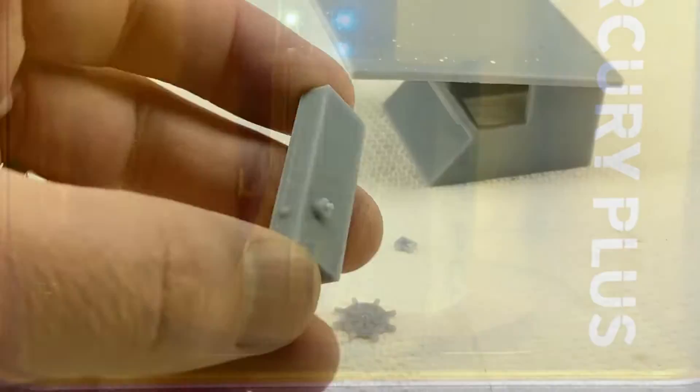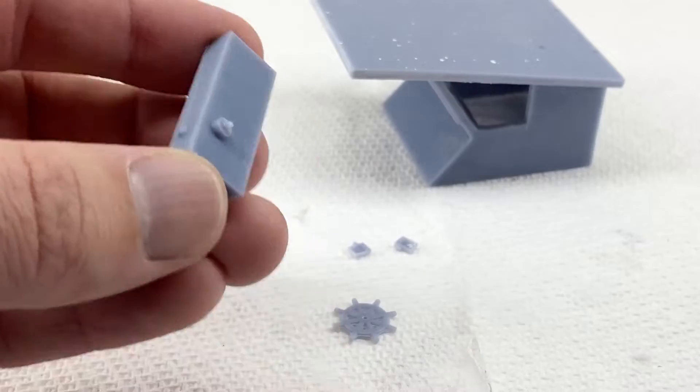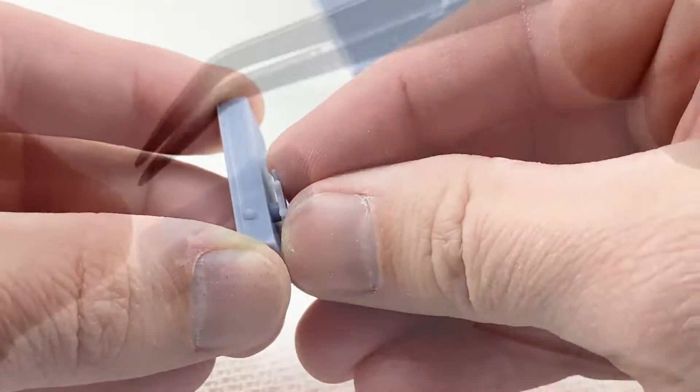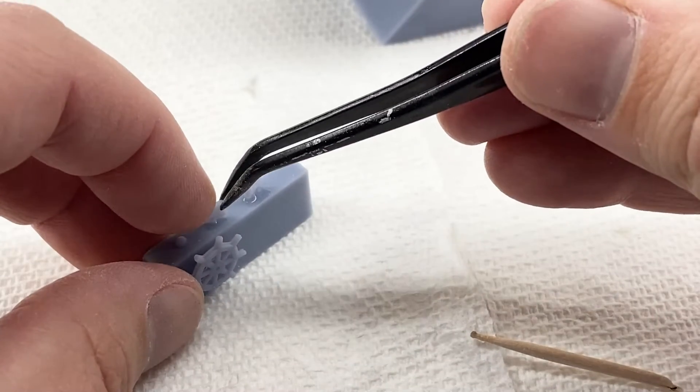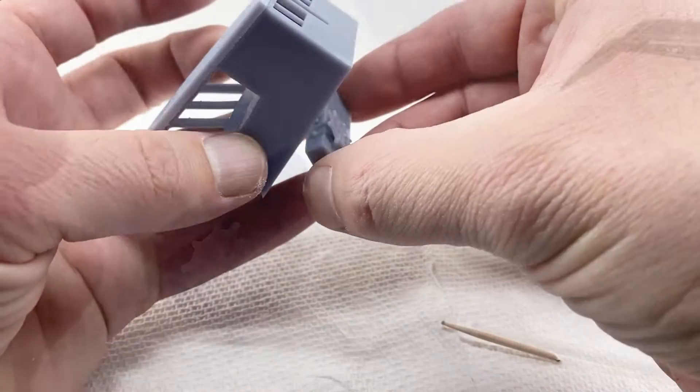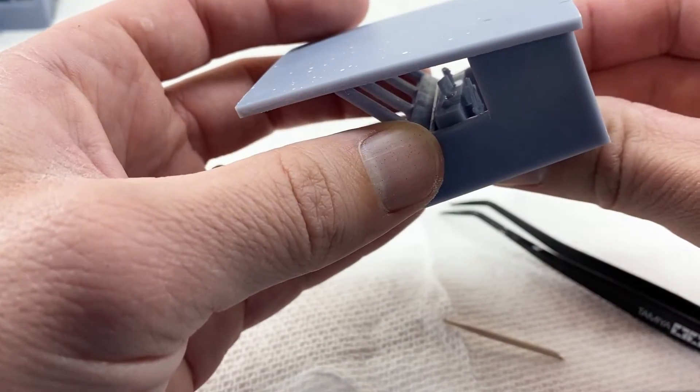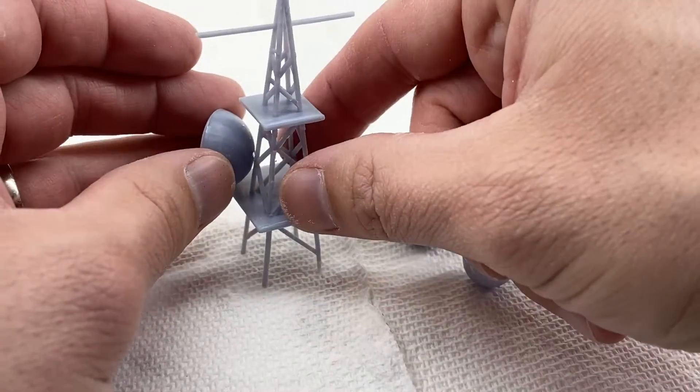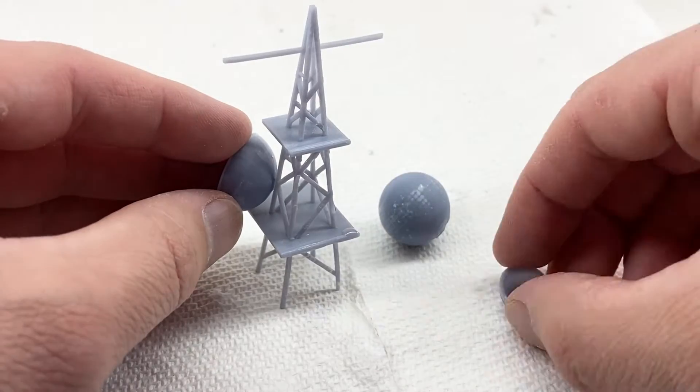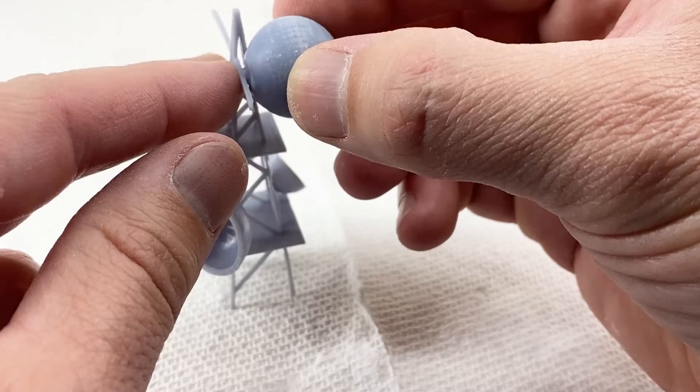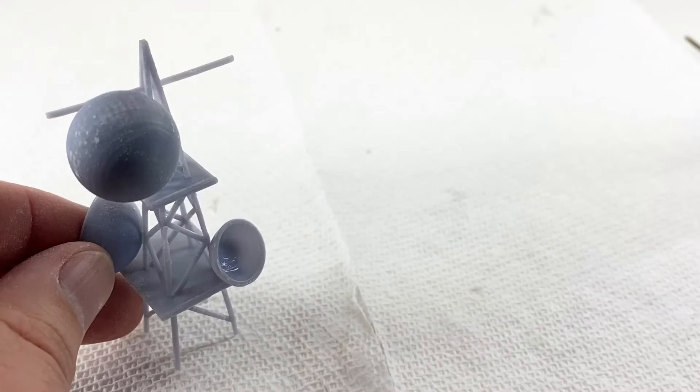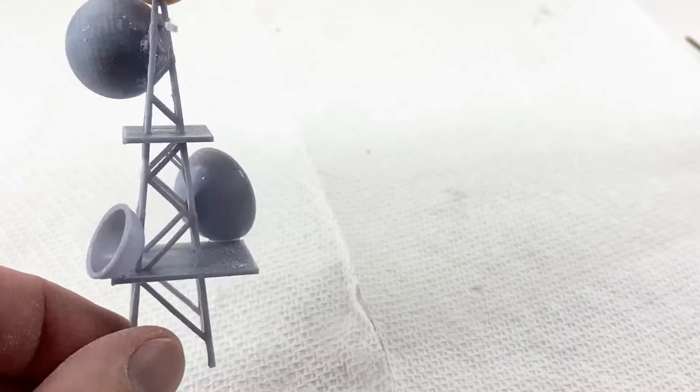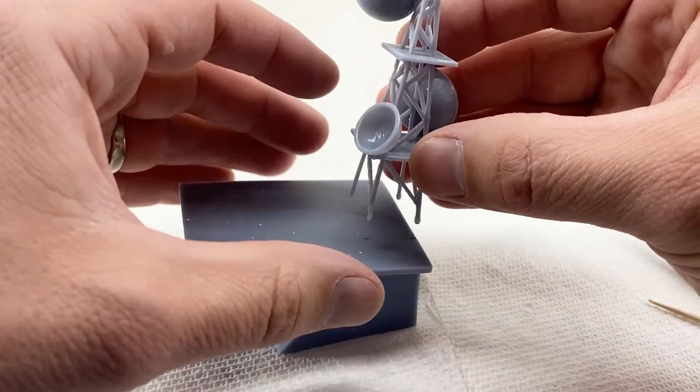And then just putting together some of the interior details that I thought would give it a little bit more life and character. Here's the radar tower. Printed all that separately just because it's too hard to print those angles all in one. And now it's just a matter of putting it all together.